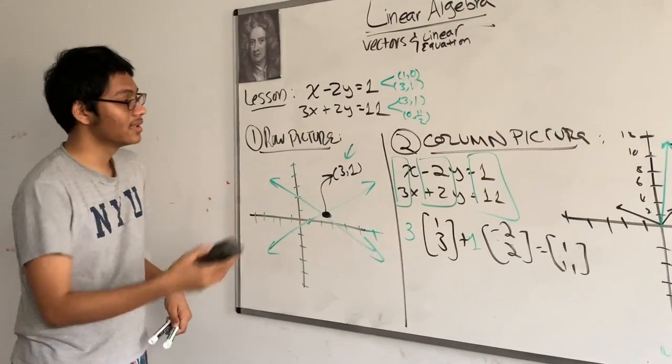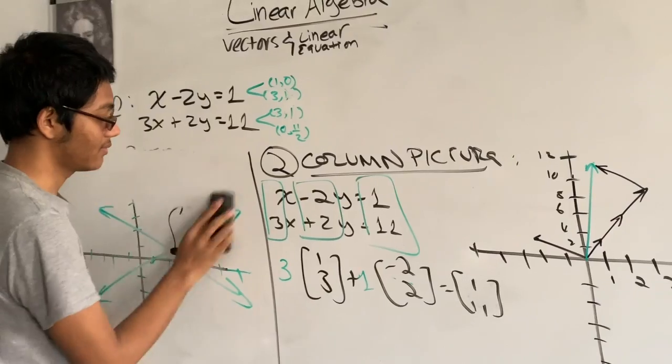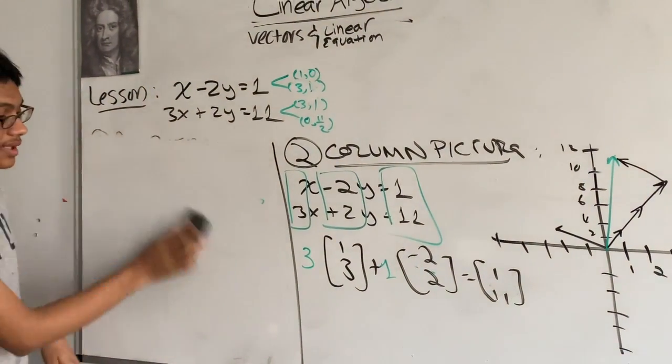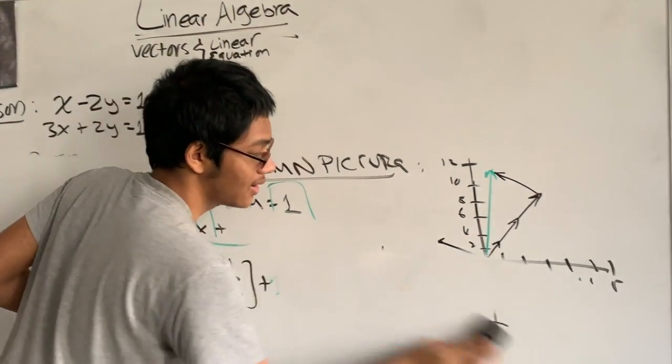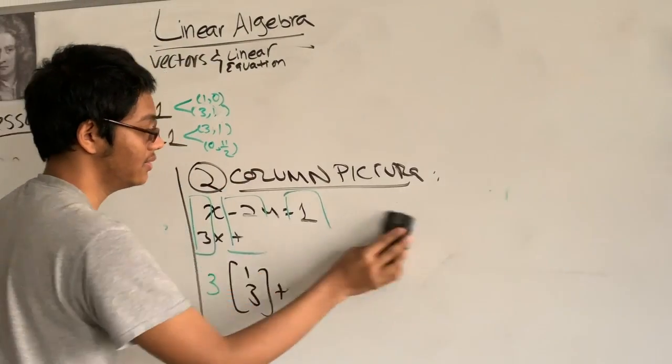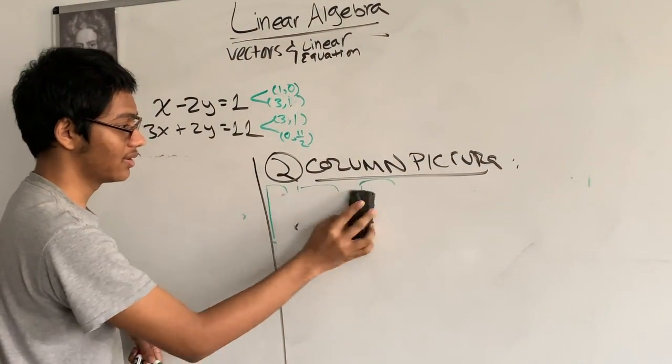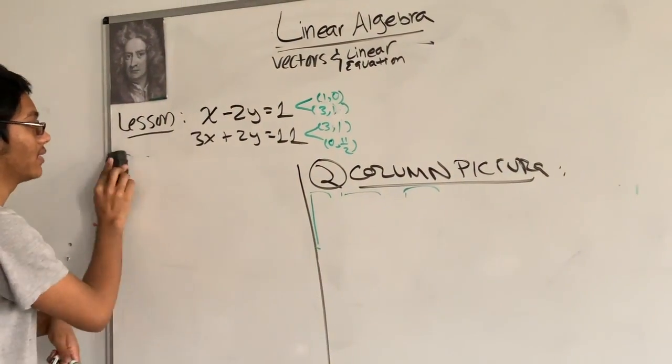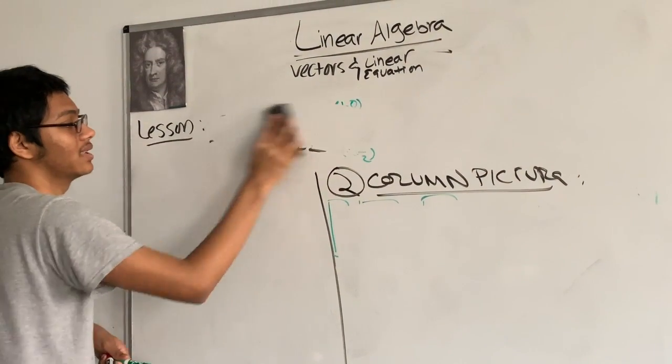we've easily solved a system of linear equations two ways, using the row picture and the column picture. And now I'll leave you with a very simple exit slip that hopefully captures what we've covered in the lesson.